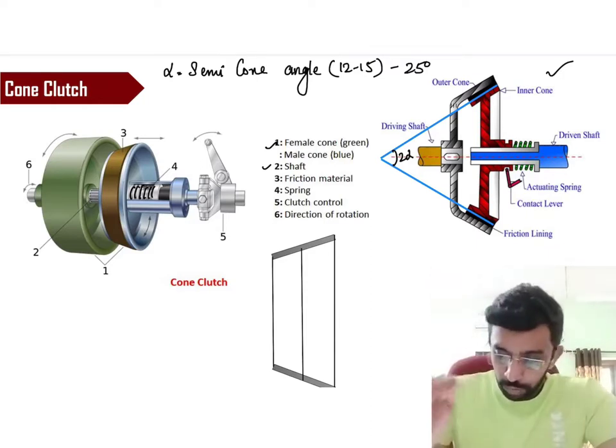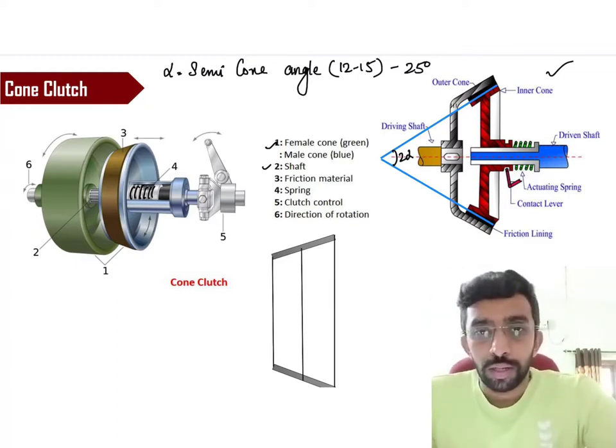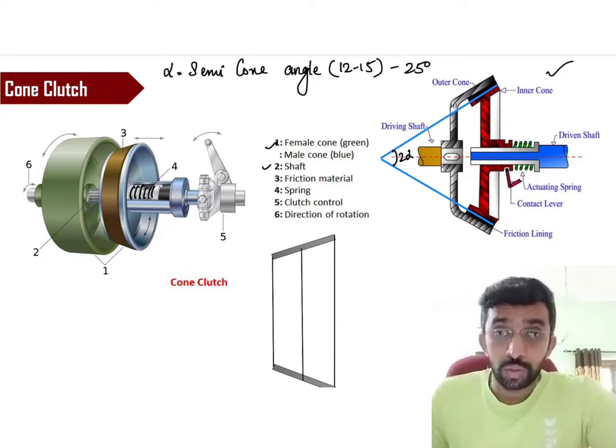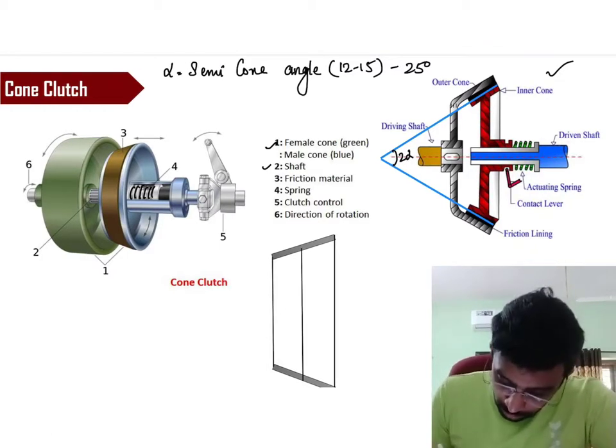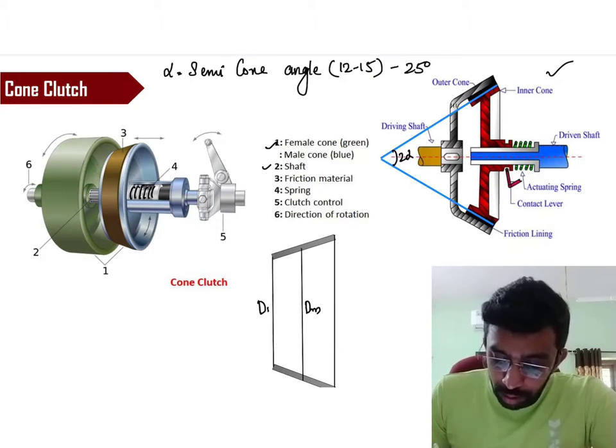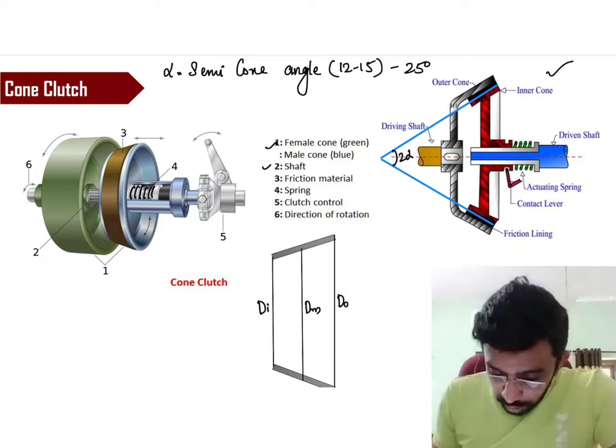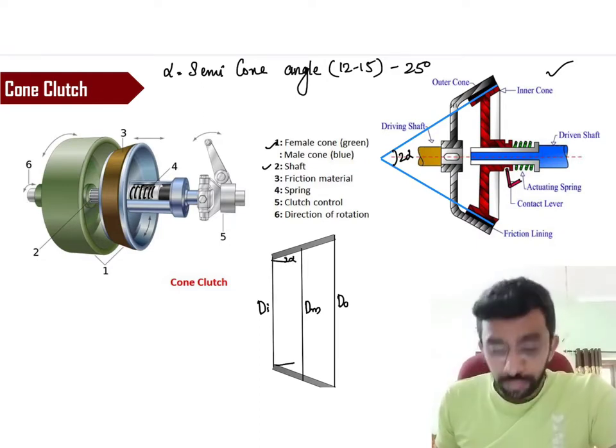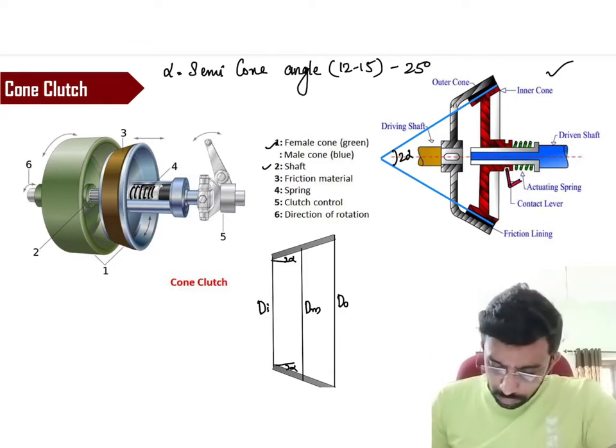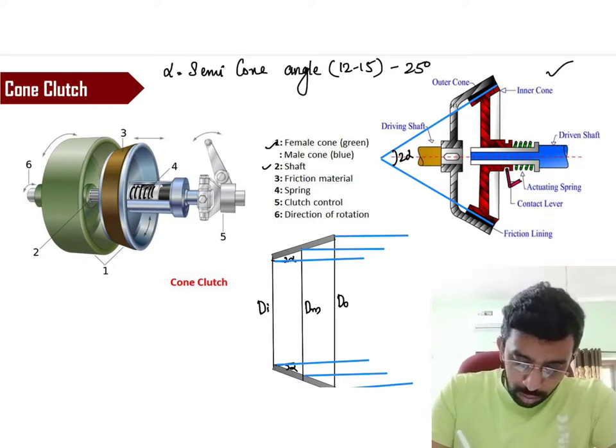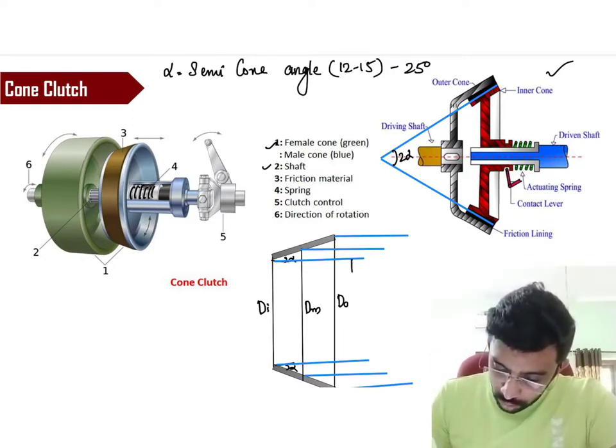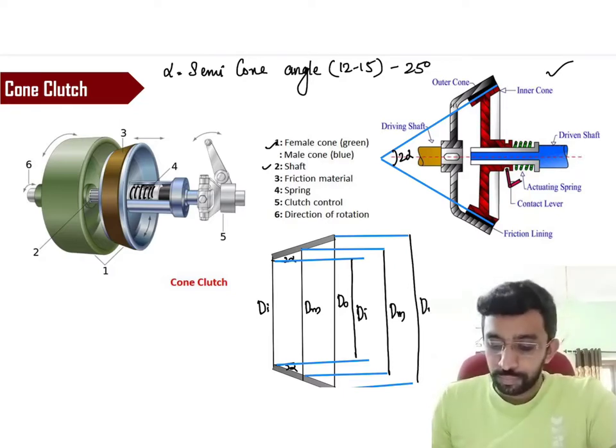Before we move forward, we have to understand, we have to do some calculation because it's a very trigonometric relation which you require to find out the outer diameter and the inner diameter. Let's say this is the mean diameter dm. This is the outer diameter, inner diameter, and this is the outer diameter. Definitely, this angle is going to be α, this angle is also going to be α.